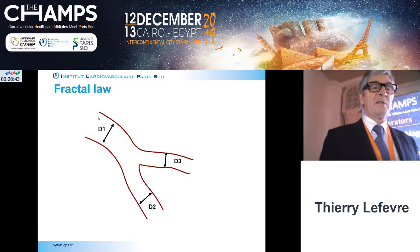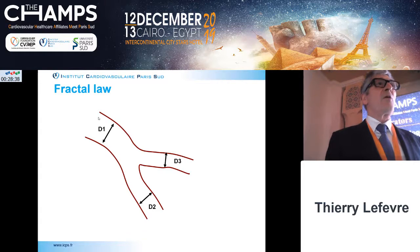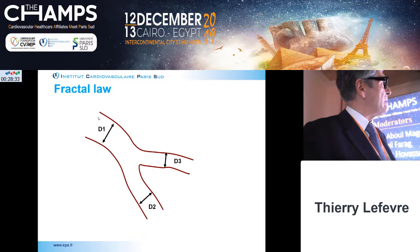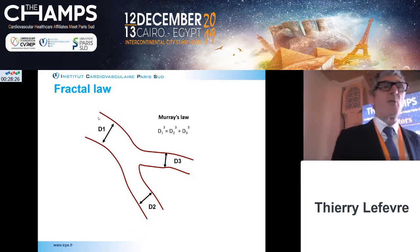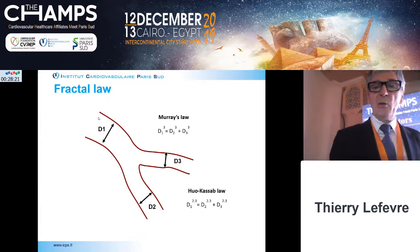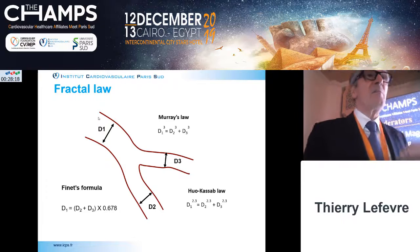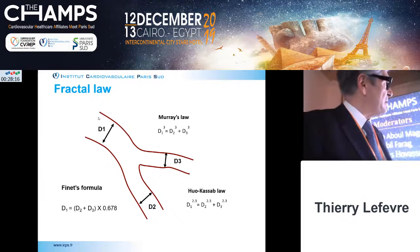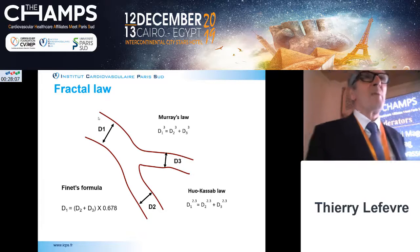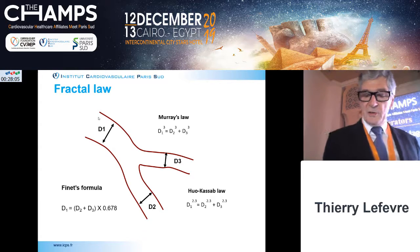A second very important point: like everywhere in nature, we have a fractal law of bifurcation. There is a very strong relationship between the proximal main branch diameter, the distal main branch diameter, and the side branch, nicely described by Murray in the 19th century, then adapted by Ikasab, and finally simplified by Gérard Finet: the sum of the two distal branches multiplied by 2, divided by 3, equals the proximal main branch.